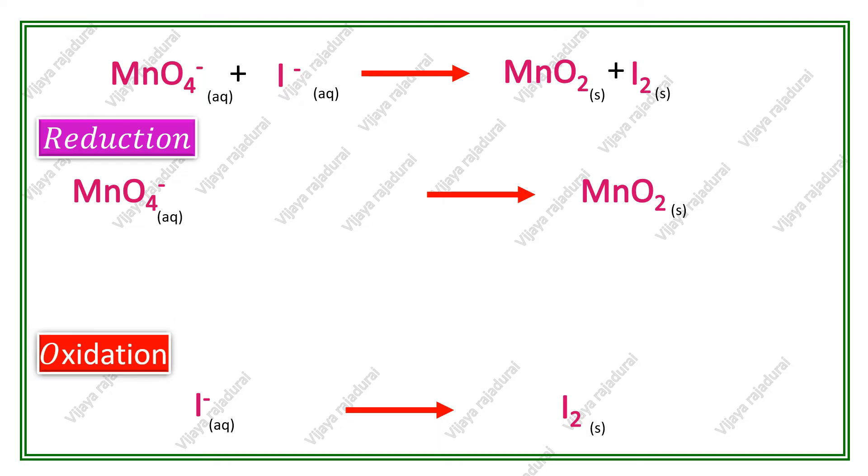The second step is balancing of atoms other than oxygen. In reduction reaction, there is no problem because on both sides, number of manganese is same. In oxidation reaction, on reactant side we have only 1 iodine, on product side we have 2 iodine, so we introduce 2 on reactant side.